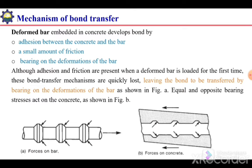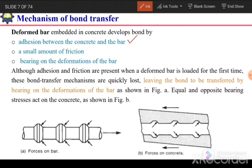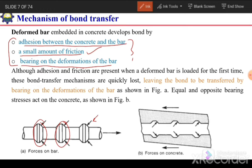For deformed bars embedded in concrete, bond is developed by three different components: chemical adhesion, just like in the case of plain bars; friction because of surface roughness; and the third — the main component — bearing on the deformation of the bar. The adhesion and friction will disappear when a tensile force is applied, but this third component will remain. The whole bond will be transferred by the bearing on these deformations. When bearing acts on the deformation of the bar, an equal but opposite force from the bar acts on the concrete, transferring the bond from bar to concrete.